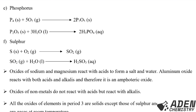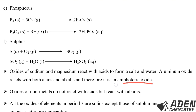The oxides of sodium and magnesium react with acids to form a salt and water. We are told aluminium oxide reacts with both acids and alkalis, and therefore it is an amphoteric oxide. Sodium oxide and magnesium oxide are bases, so when they react with acids we get salt and water as the only products. Aluminium oxide will react with both acids and strong bases or alkalis, therefore it is an amphoteric oxide.